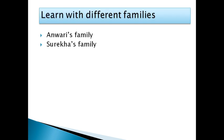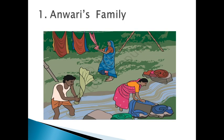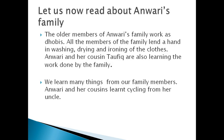We learn so many things from our family. Here I have taken the example of two families: Anwari's family and Surikha's family. In Anwari's family, the older members work as dhobis. All members of the family lend a hand in washing, drying, and ironing the clothes daily. So Anwari and her cousin are also learning the work done by the family. Anwari and her cousin also learn cycling from her uncle. This is the practice of Anwari's family.